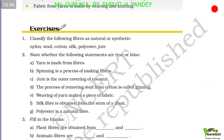Exercise — Question and Answers. Classify the following fibers as natural or synthetic: Nylon is a synthetic fiber. Wool is a natural fiber. Cotton is a natural fiber. Silk is a natural fiber. Polyester is a synthetic fiber. Jute is a natural fiber.